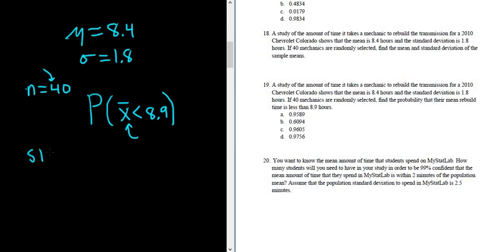So in StatCrunch, we can go to stat, calculators, normal. Before we do that, we have to compute the standard deviation of x-bar. It's sigma over the square root of n. And this is the standard deviation that's going to go into StatCrunch.